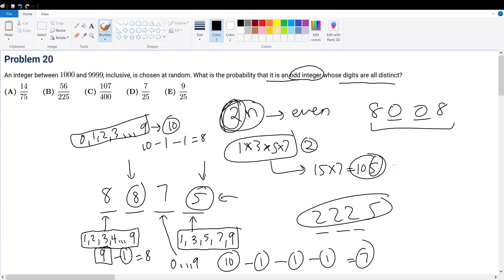So multiplying this out will give us our answer. What is 8 times 8 times 7 times 5? Well, 8 times 5 is 40. 8 times 7 is 56. So what is 56 times 40? Well, that is 2240.